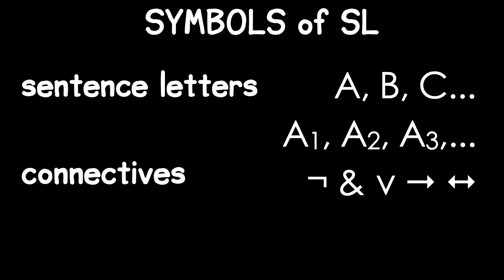In addition to sentence letters, we have the five connective symbols that we saw just a minute ago. Finally, we'll have parentheses. And in the next video, we can start thinking seriously about how all of these symbols work together when translating from English into SL.